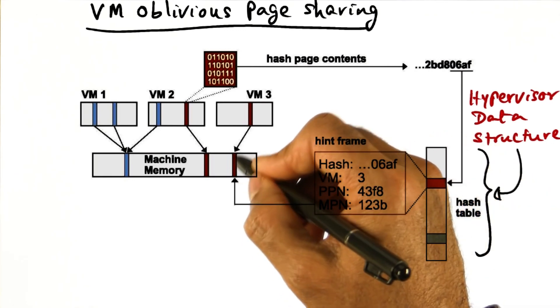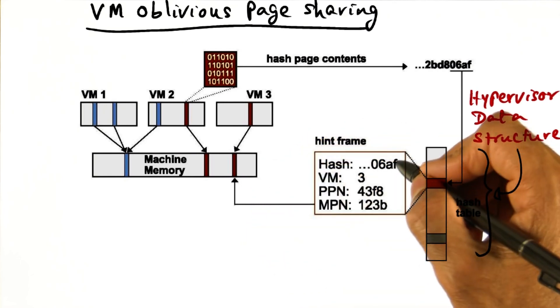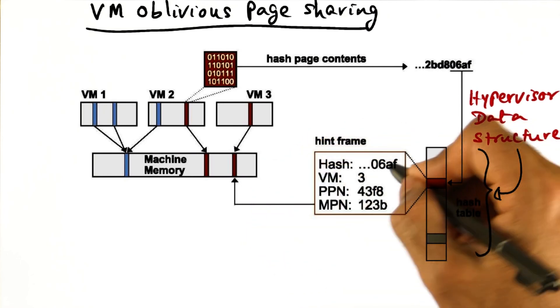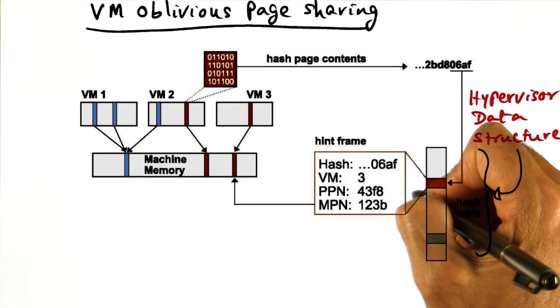The content hash, that is, if you hash the contents of this memory page, you get a signature. That signature is the content hash. That content hash is stored in this data structure.